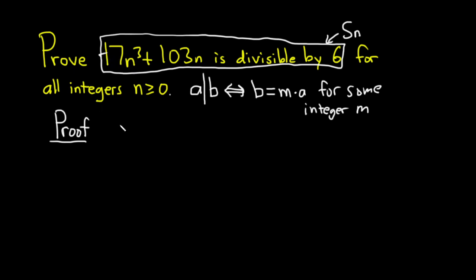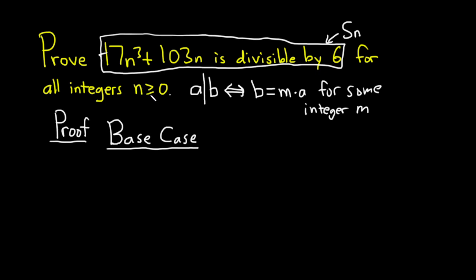In an induction proof there are different steps, so I'm going to label them. The first step is called the base case. In the base case, you want to show that your statement S sub n is true for the smallest integer in question, which is actually 0 in this case. So we have to show our statement is true when n equals 0.